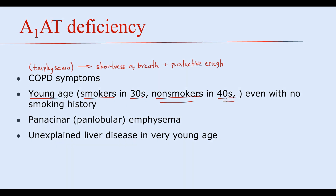When emphysema develops in a 40-year-old person without any smoking history, it is quite a suspicious clinical situation. In such a case, we always have to keep in mind the possibility that this person may have very low antitrypsin production. The characteristic feature of alpha-1-antitrypsin deficiency is panacinar, or so-called panlobular, emphysema.